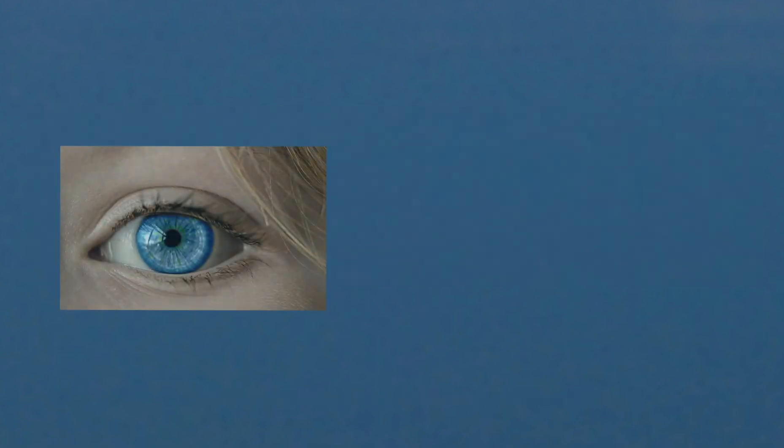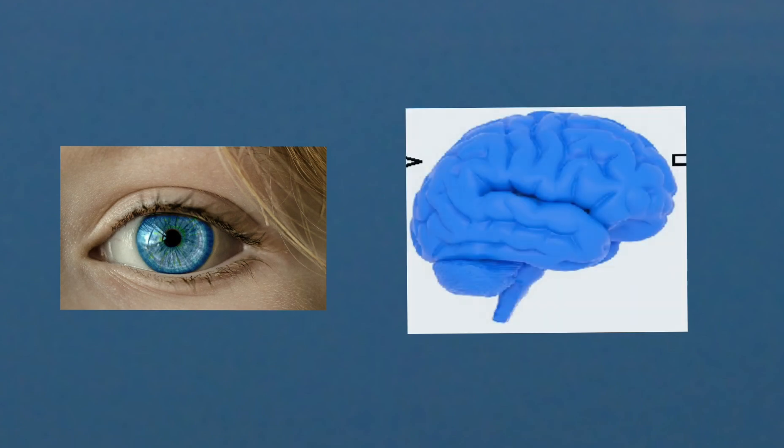Though the eye acts as a sensor in receiving the image, we see things based on how the brain processes the signals.